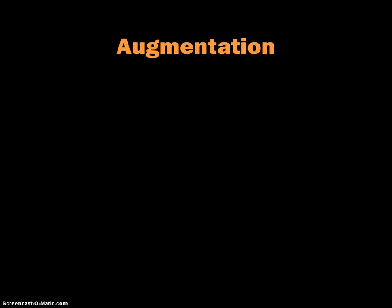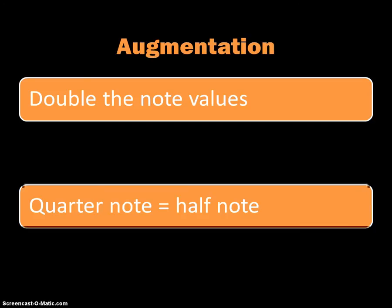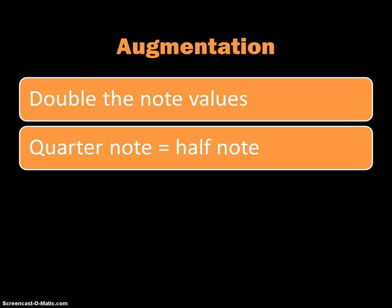Starting with augmentation, augmentation means we're going to be making the note values longer. We're going to make it so that the note values are doubled. So when you've got a quarter note, that's going to turn into a half note—obviously, a one-count note turning into a two-count note.